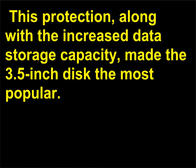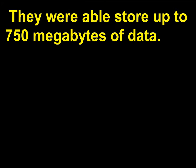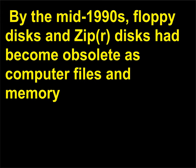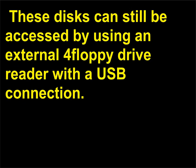This protection, along with the increased data storage capacity, made the 3.5-inch disk the most popular. ZIP disks were very similar to floppy disks but the magnetic coating was of much higher quality; they were able to store up to 750 megabytes of data. By the mid-1990s, floppy disks and ZIP disks had become obsolete as computer files and memory required larger storage and computers were no longer being manufactured with floppy disk drives. These disks can still be accessed by using an external floppy drive reader with a USB connection.